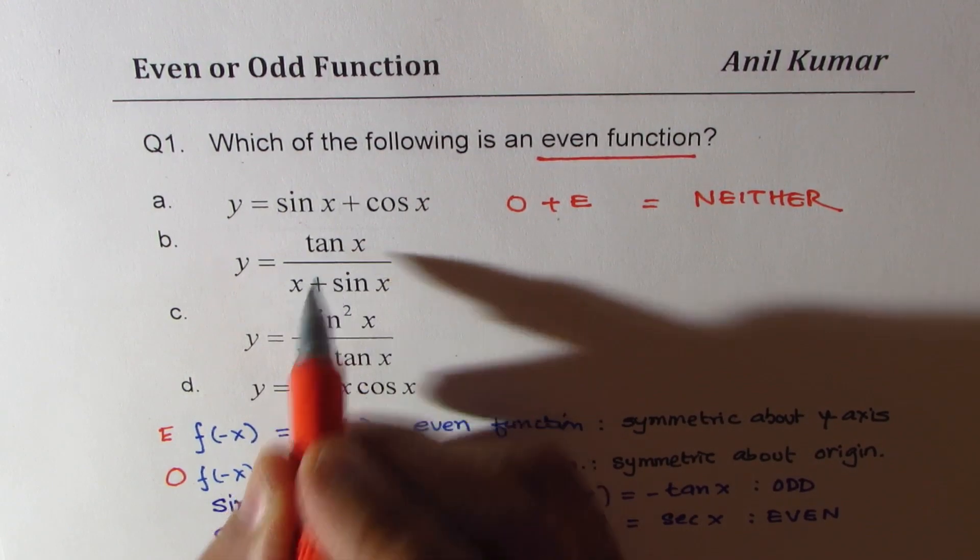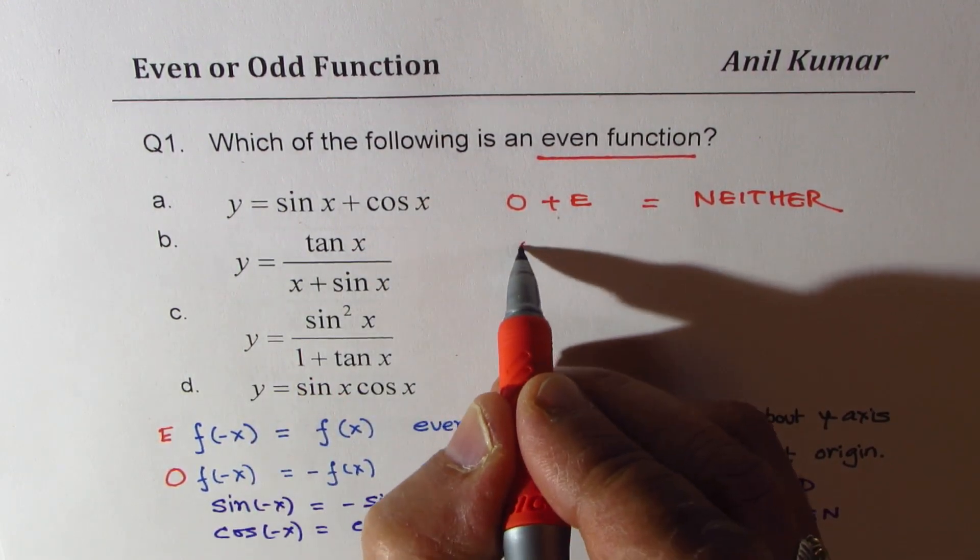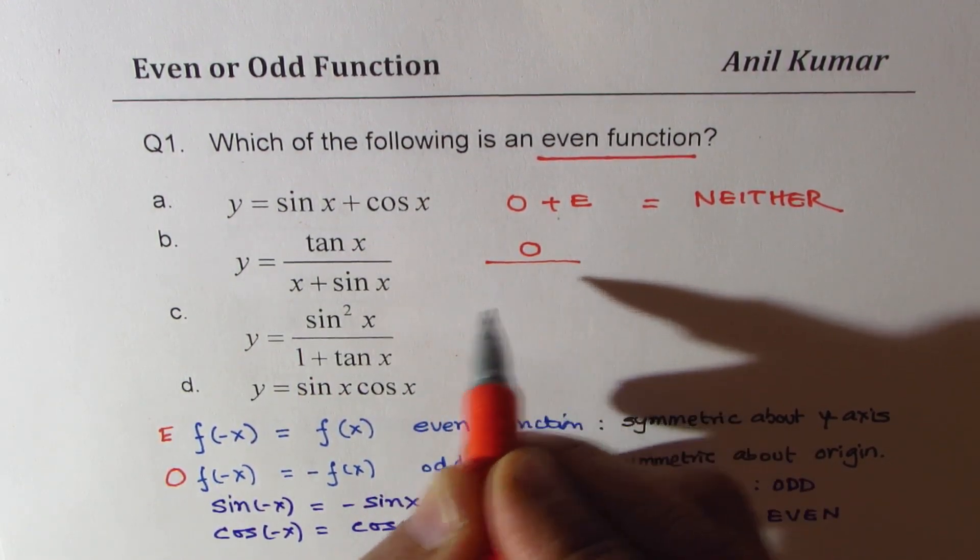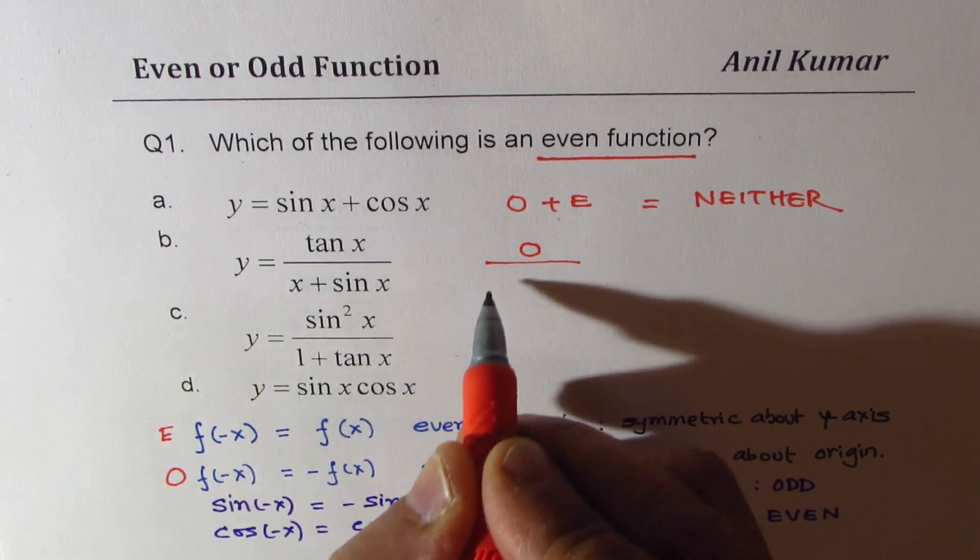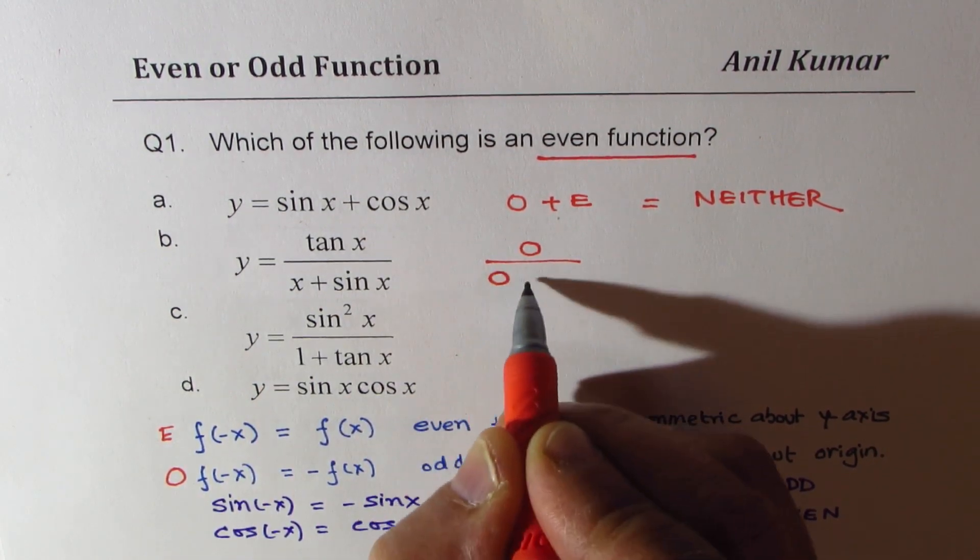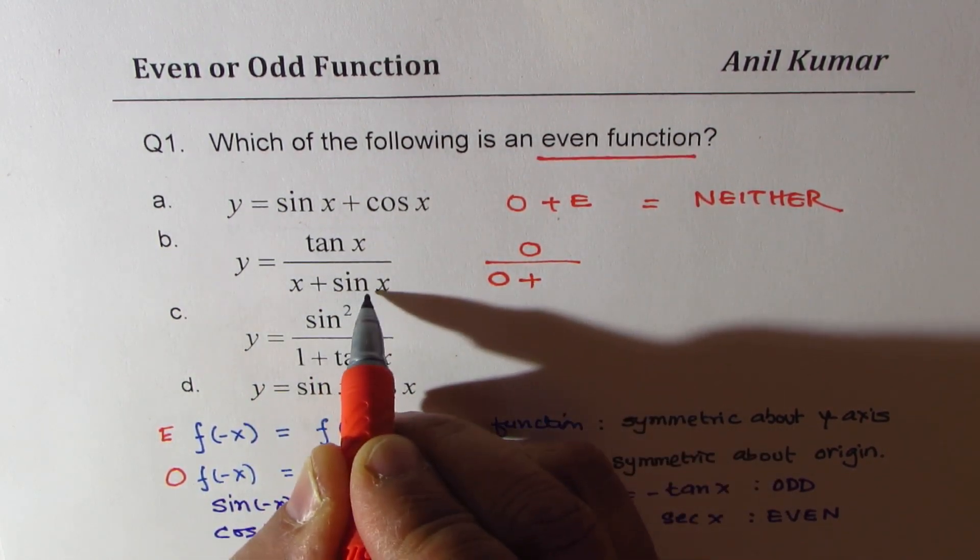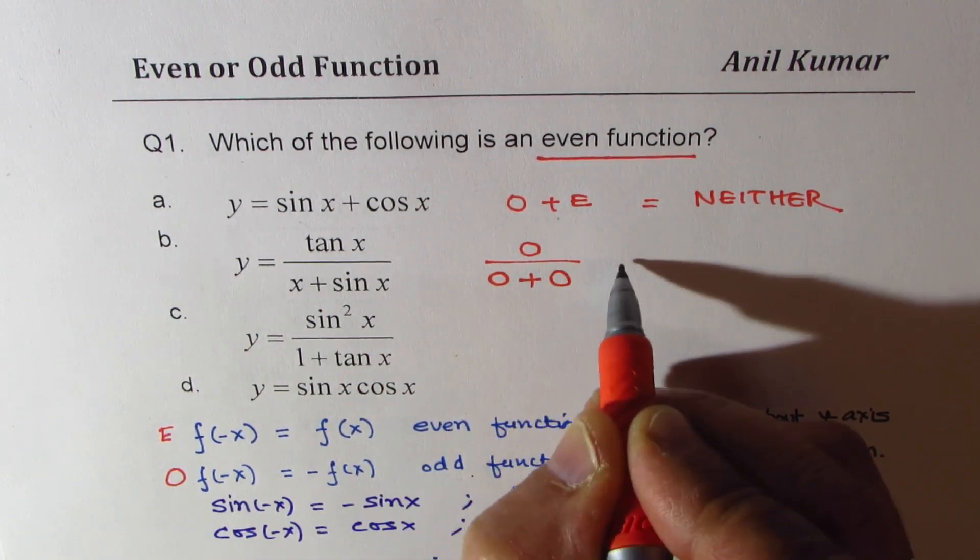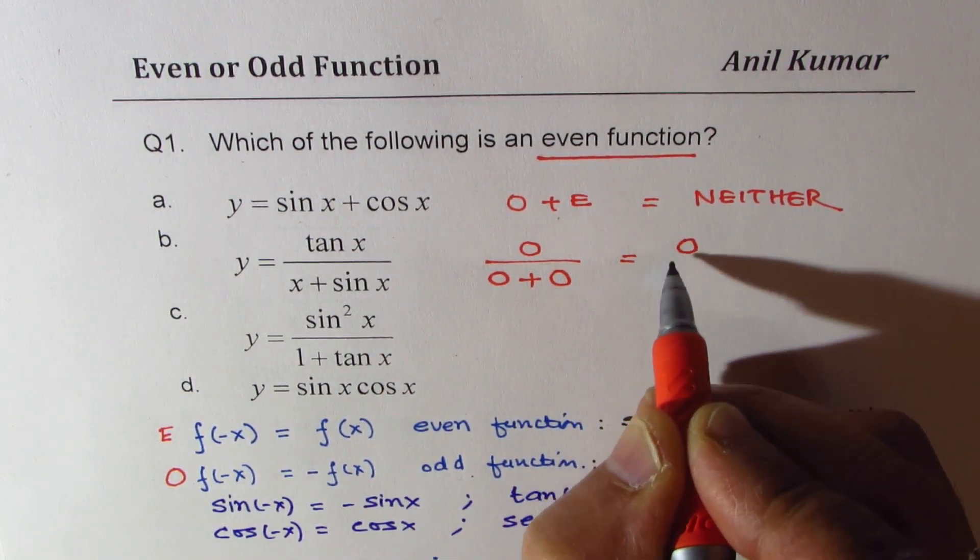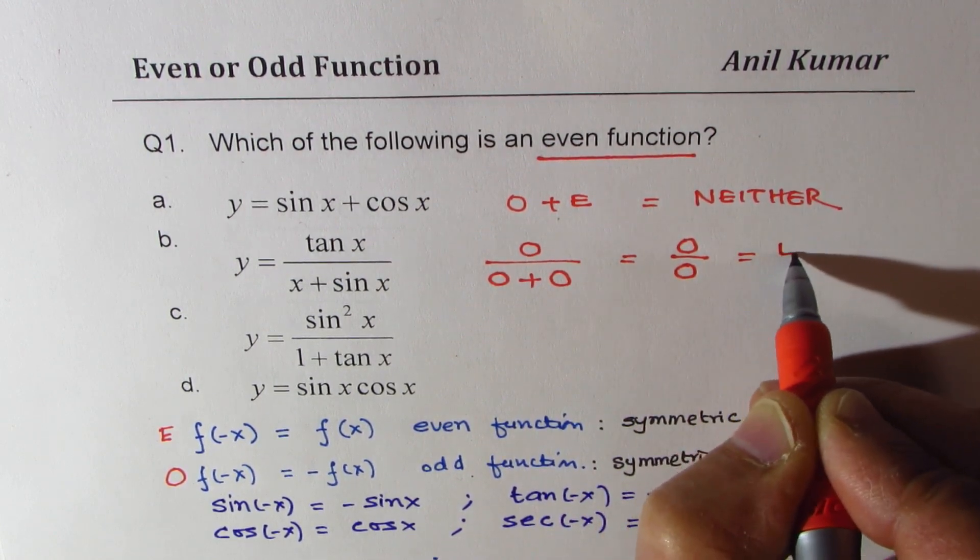Now in this case, tan is an odd function. We are dividing this by x, which is also an odd function, plus sine x, which is also an odd function. So what we are getting is odd over odd, and that is even.